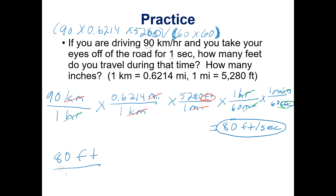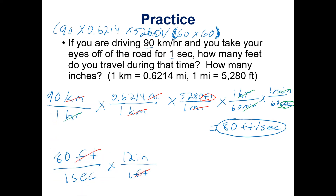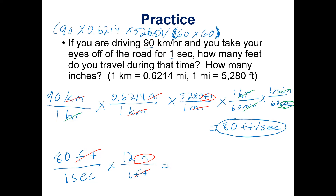Let's see how many inches that is. We have 80 feet per one second and we know that one foot has 12 inches. Feet cancels with feet and we're left with inches. If we take our answer from the last step and multiply by 12, we come up with 984 inches per second, and if we round that to one significant figure that rounds off to 1000 inches per second.